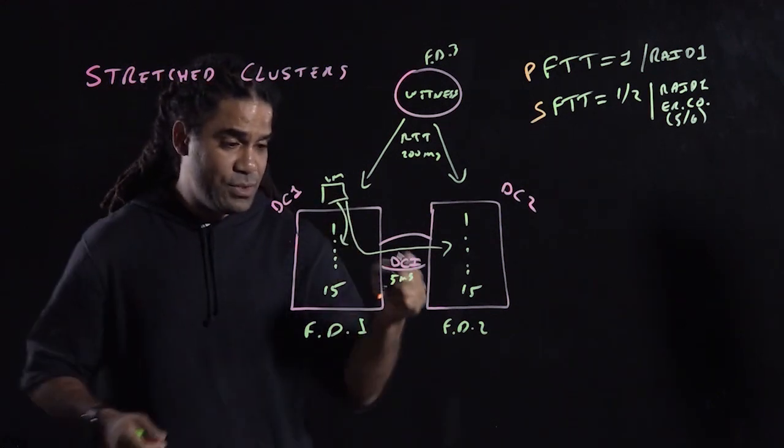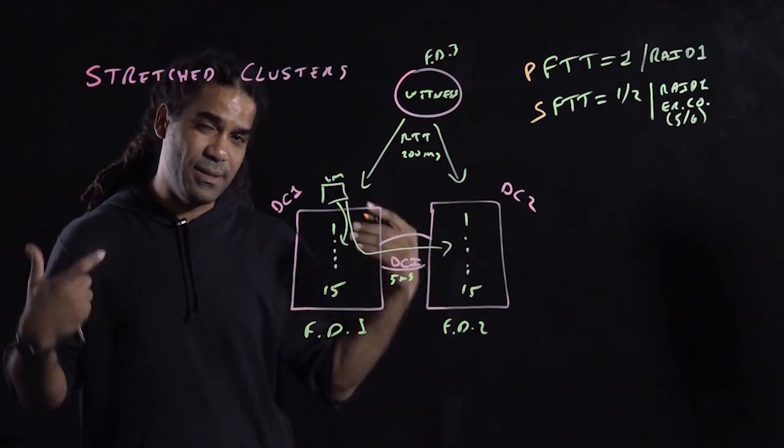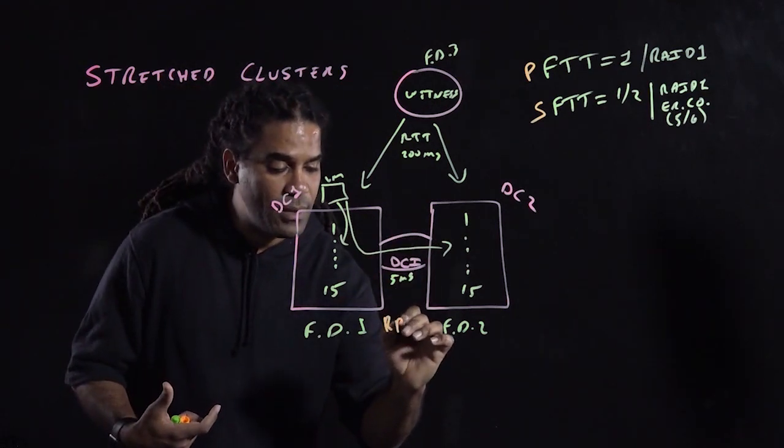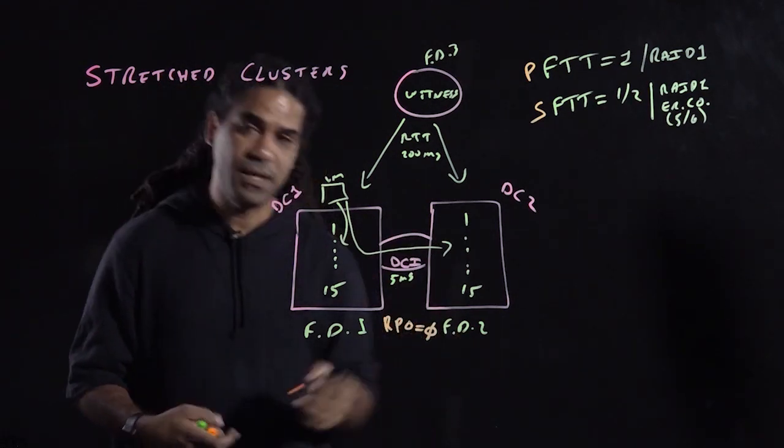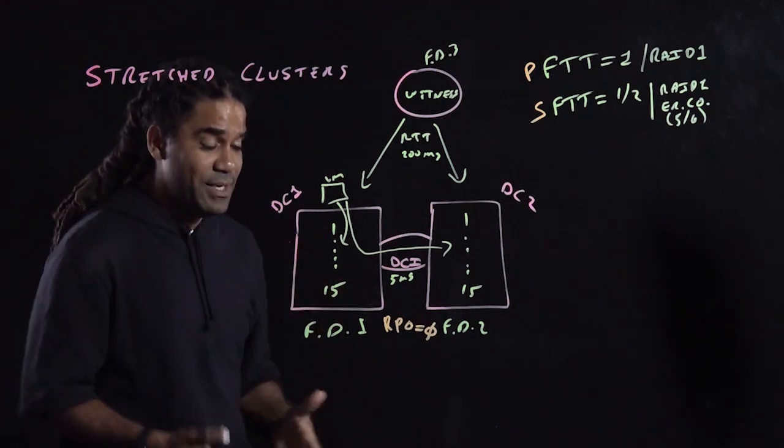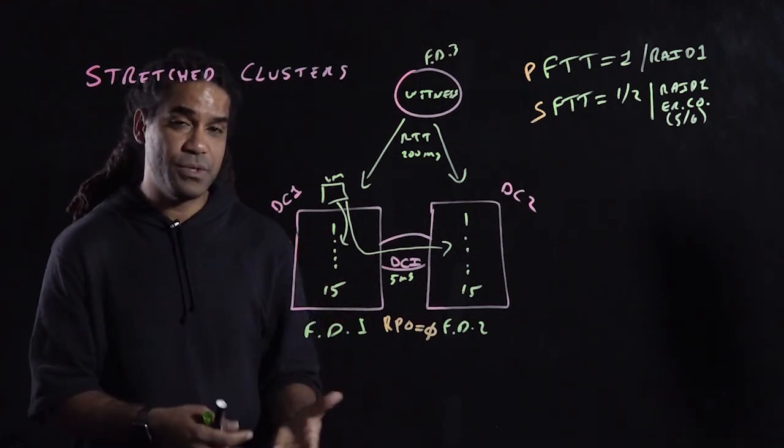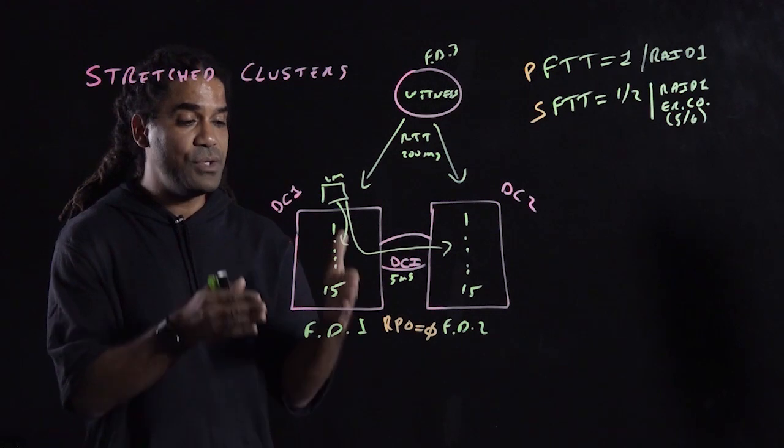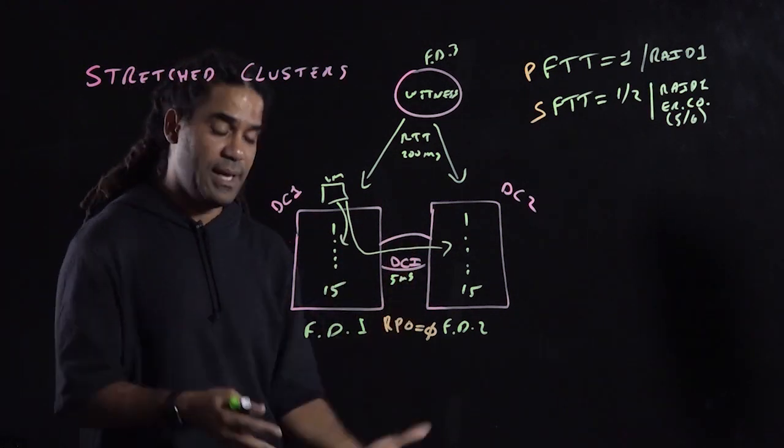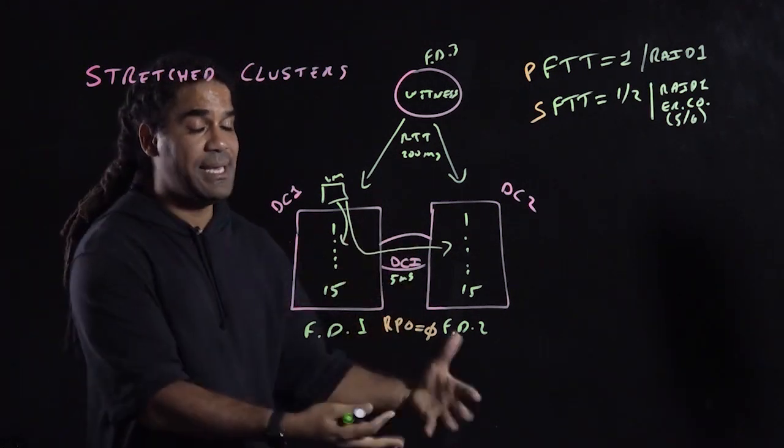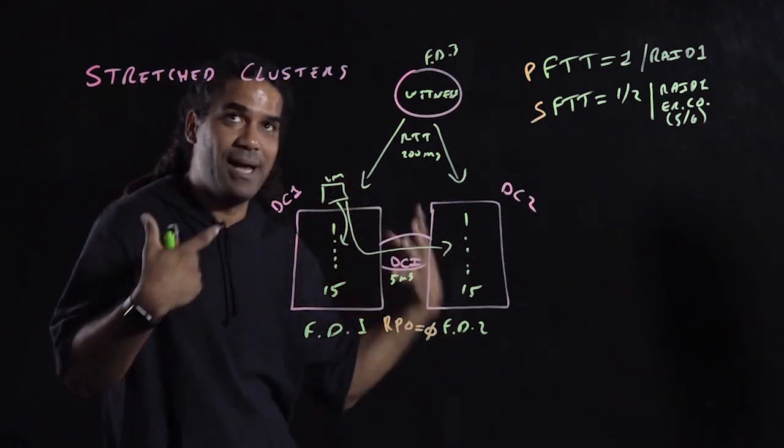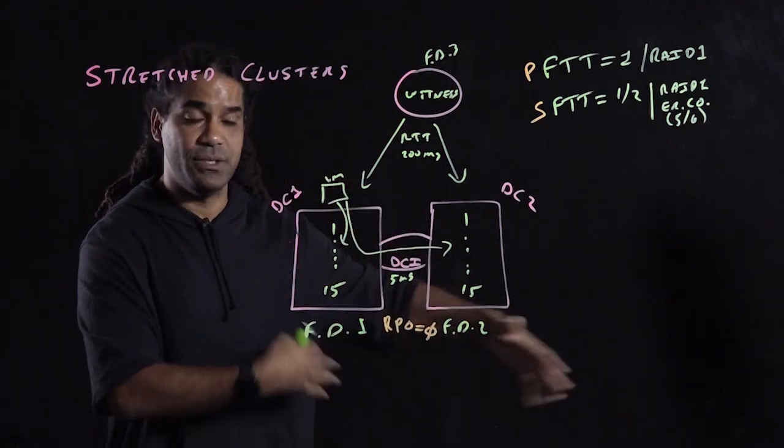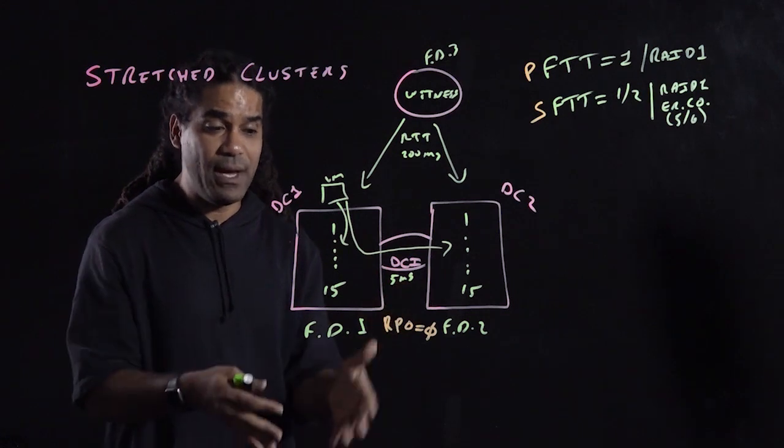That means that because you have the writes being acknowledged on both sides, they're protected, you have an RPO of zero, which means you finally have a storage solution that natively allows you to be able to have your data replicated across to different locations without having to spend extra, well, lots of money to have metro cluster storage. That's what I really like about this.